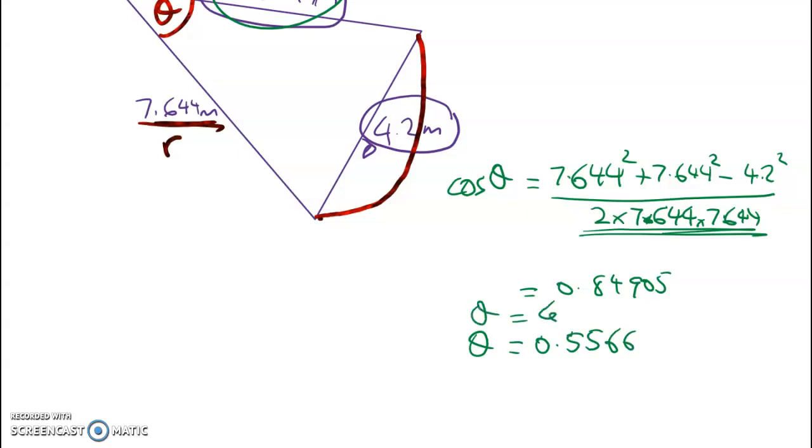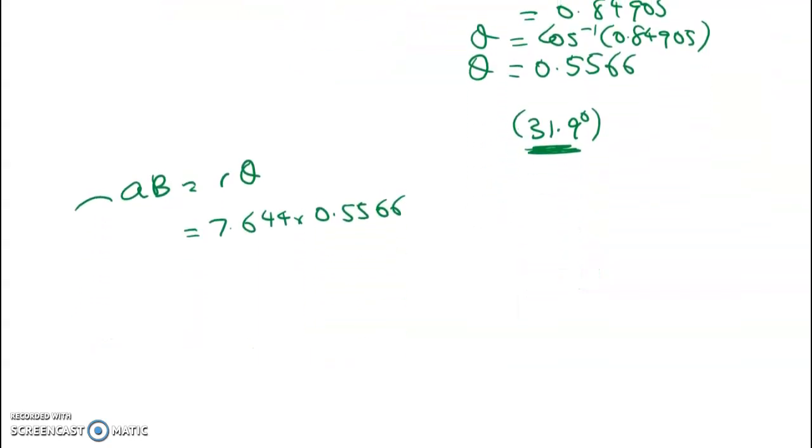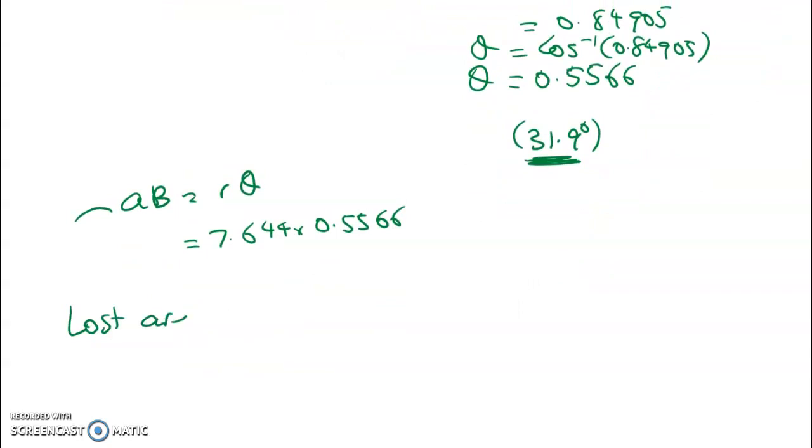But if you want to convert it to degrees just to check that it makes sense, it's 31.9 degrees. So arc length AB equals R theta, which is 7.644 times 0.5566. And the lost area for this one is the area of the segment, which is half R squared into theta minus sine theta, which gives me this. And I'm going to do a part two video, so don't worry.